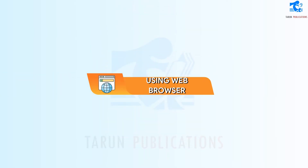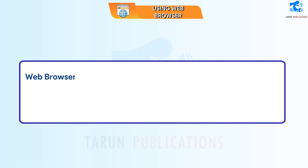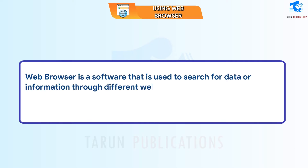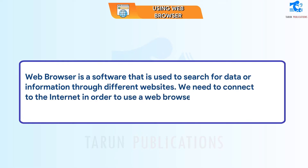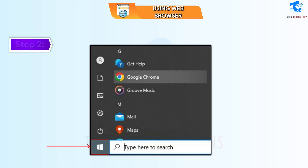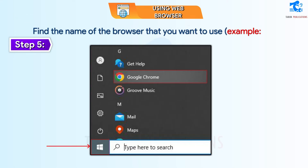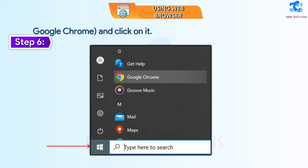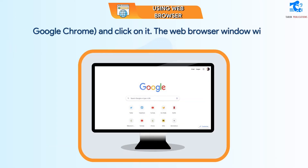Using Web Browser. A web browser is a software that is used to search for data or information through different websites. We need to connect to the internet in order to use a web browser. Follow these steps to use a web browser: Step 1 – Click on the Start button on the taskbar. Step 2 – Find the name of the browser that you want to use, for example Google Chrome, and click on it. The web browser window will open.